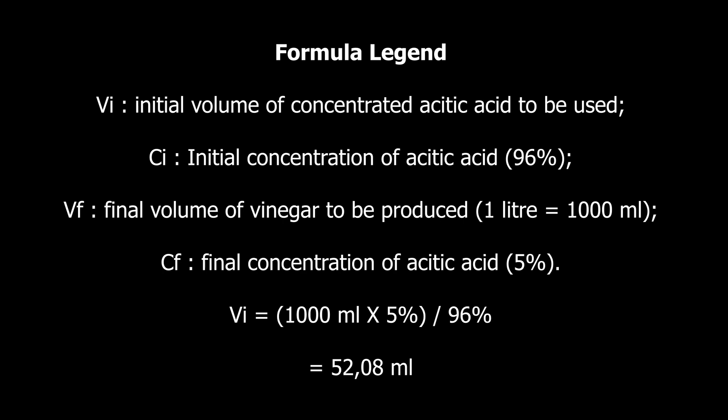Vi is the initial volume of concentrated acetic acid to be used. Ci is the initial concentration of the acetic acid from your supplier — in this case, 96%. Vf is the final volume to be produced; in this video we're making one liter, so Vf = 1000 mL. Cf is the final concentration — here we're targeting 5%. So Vi = (1000 mL × 5%) / 96%, which gives us 52.08 mL of concentrated acetic acid.